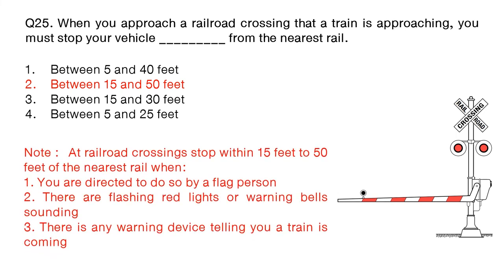Note: at a railroad crossing, stop within 15 feet to 50 feet of the nearest rail when: number 1, you are directed to do so by a flag person; number 2, there are flashing red lights or warning bells sounding; number 3, there is any warning device telling you a train is coming.